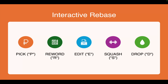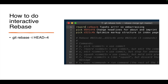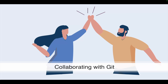Interactive rebase is a powerful git feature that allows you to rewrite commit history interactively. It enables you to modify, reorder, combine, or delete commits before applying them to a branch. To use it, you need to be familiar with the possible actions: pick, reword, edit, squash, and drop. Execute `git rebase -i HEAD~<n>` where `-i` represents interactive mode and `n` is the number of recent commits to consider. As shown, you can reword messages, pick certain commits, drop them, or squash them — fixup is also available.